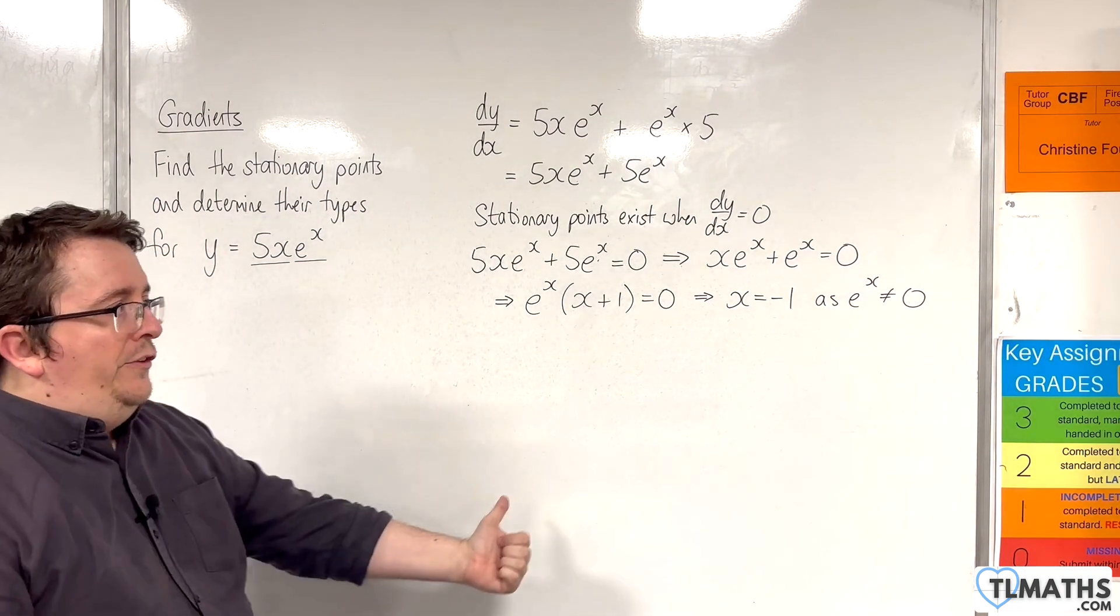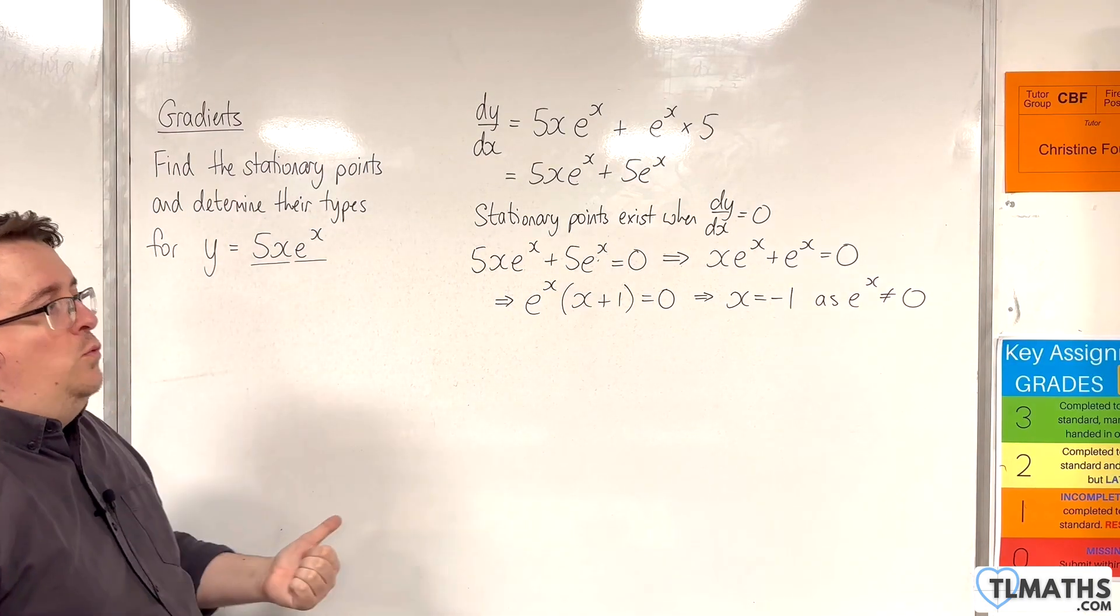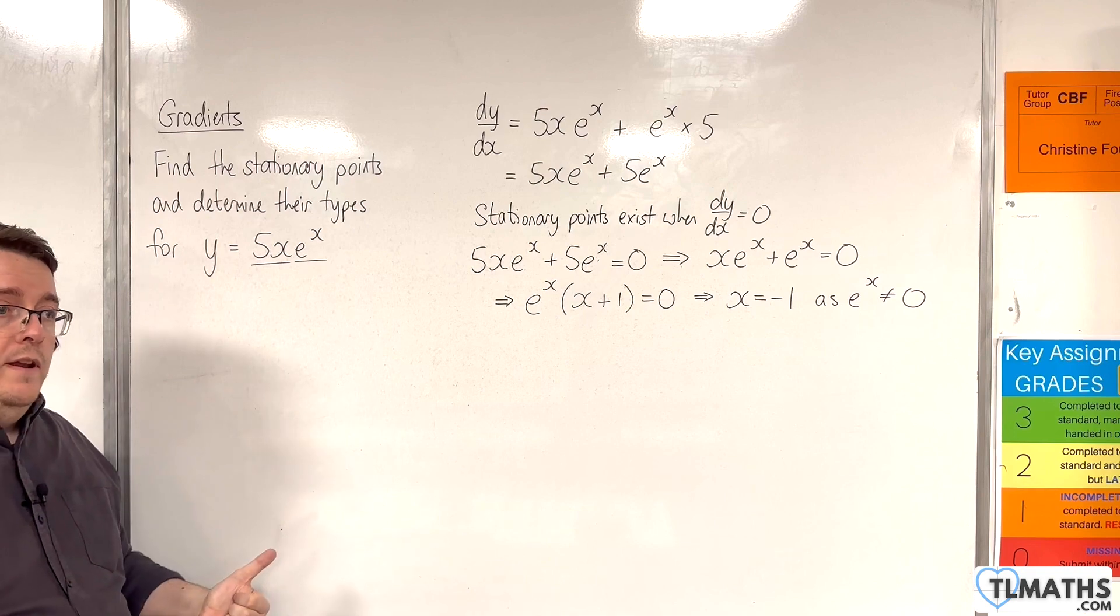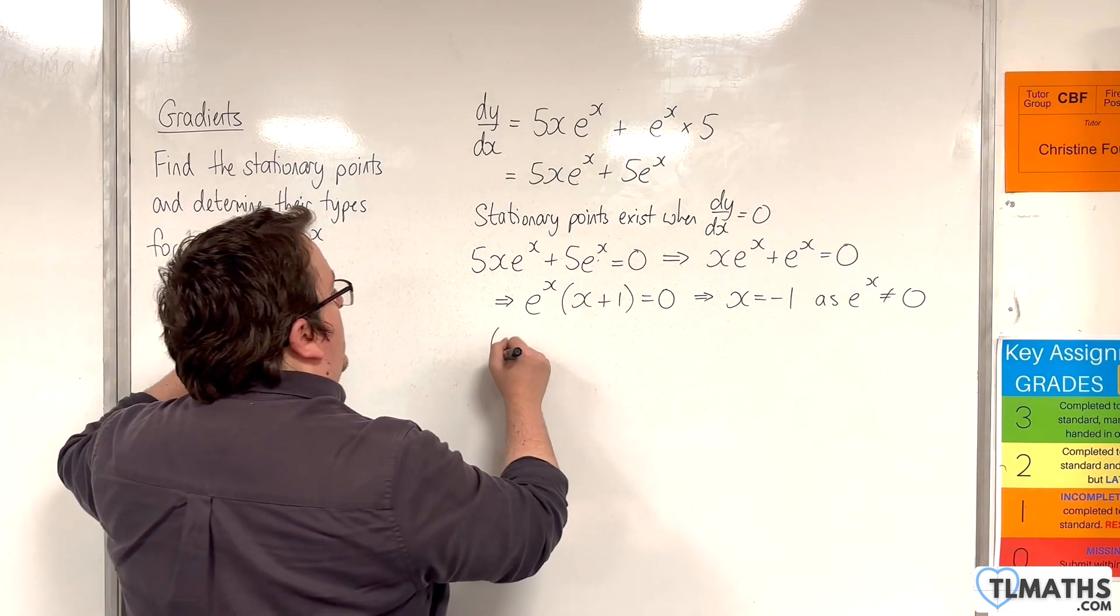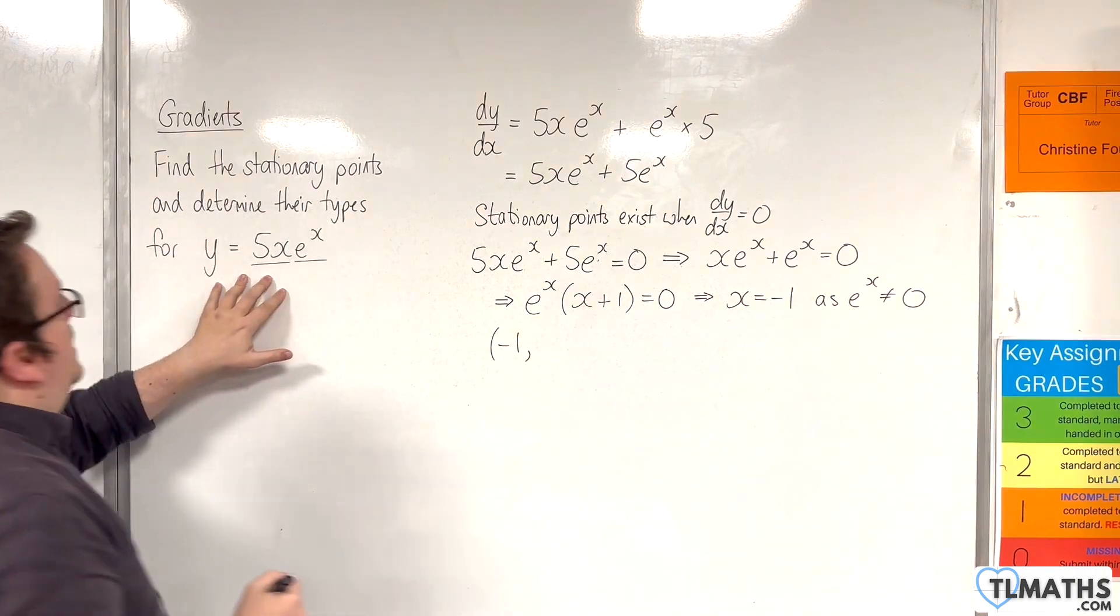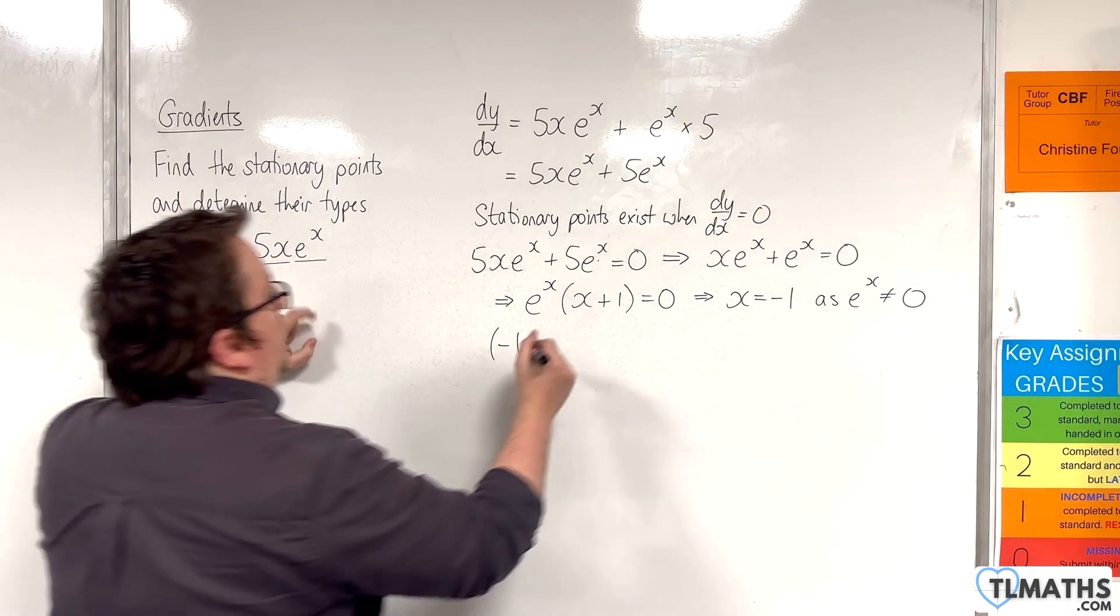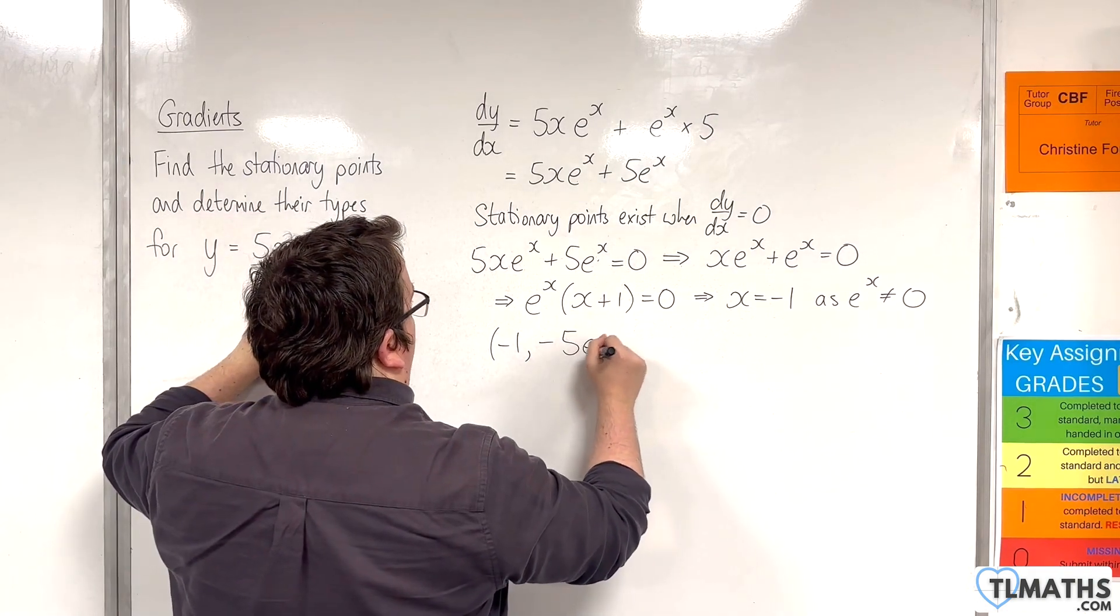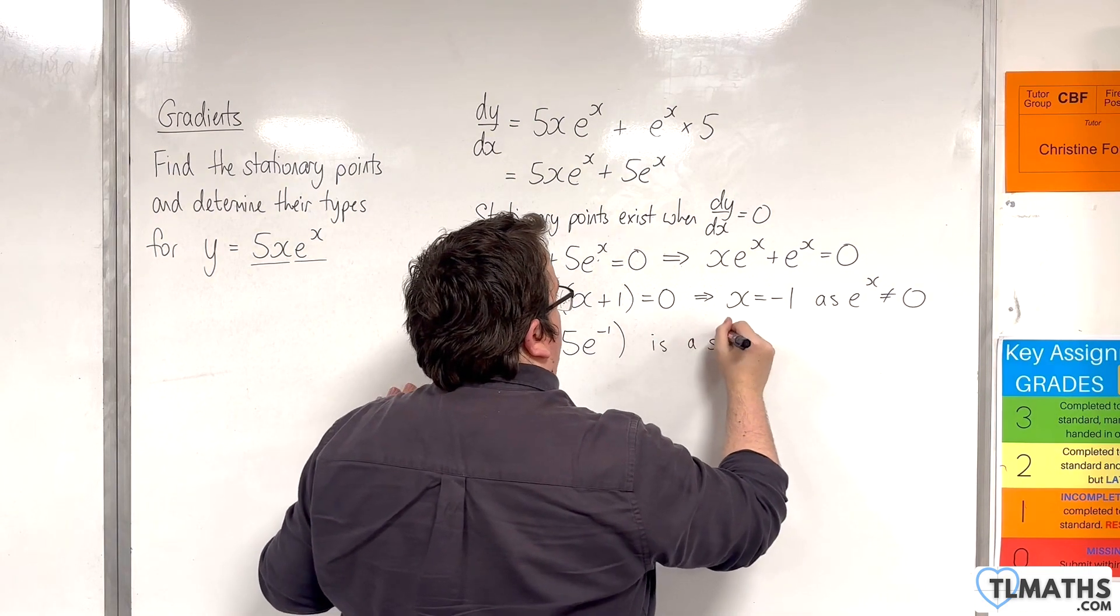We have one stationary point and it's got x equals minus 1. I'd like to work out what the y-coordinate is for that. If I have minus 1 as the x value, then the y value will be 5 times minus 1 times e to the minus 1. So minus 5 e to the minus 1 is a stationary point.